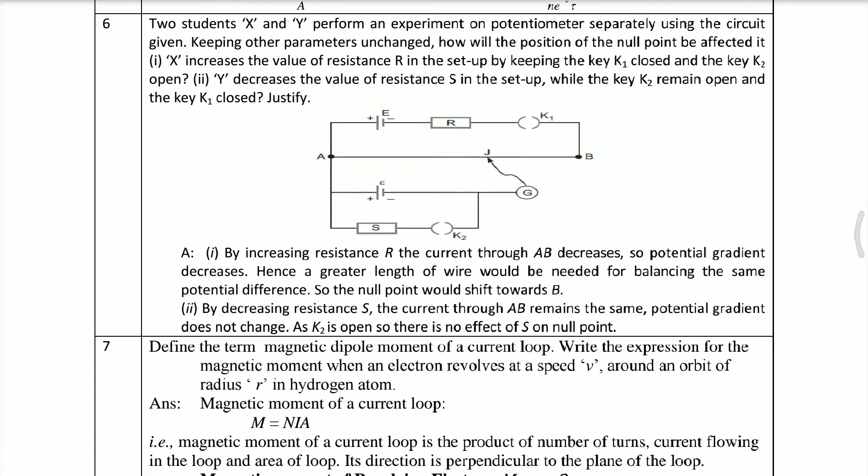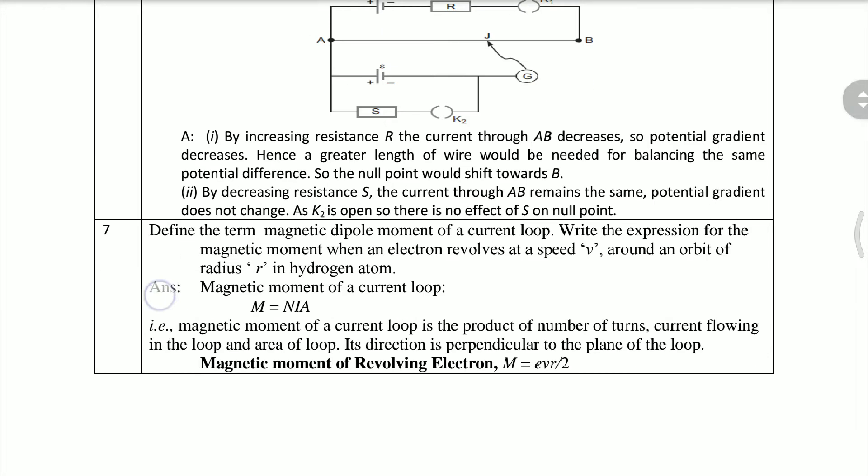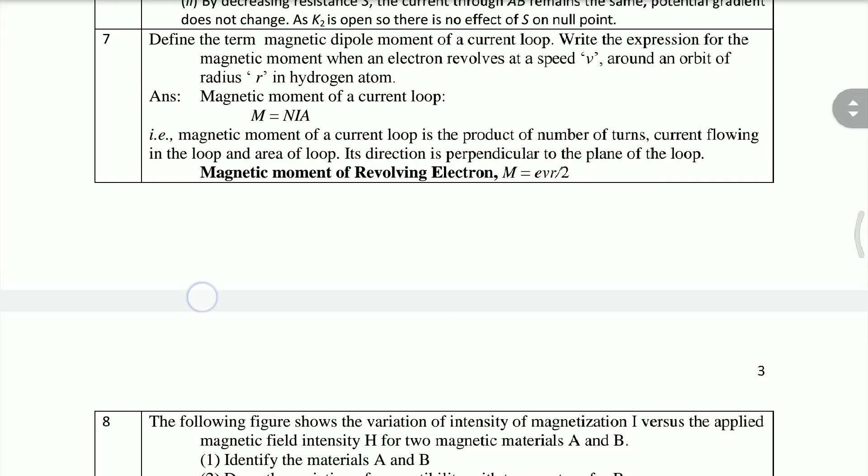You should know which thing is increasing or decreasing. Those questions they will ask you. Very easy questions come from potentiometer, trust me. Questions that are difficult: Magnetic movement of a current loop is the product of number of turns, current flowing in the loop, and area of loop. Its direction is perpendicular to the plane of the loop. Magnetic movement of revolving electron m equals evr by 2.